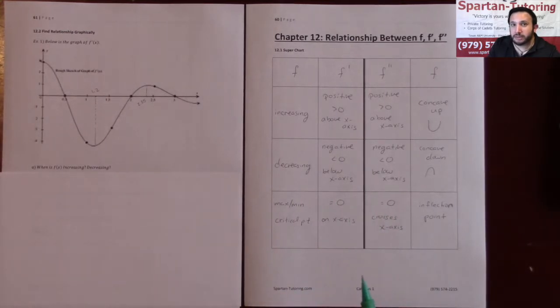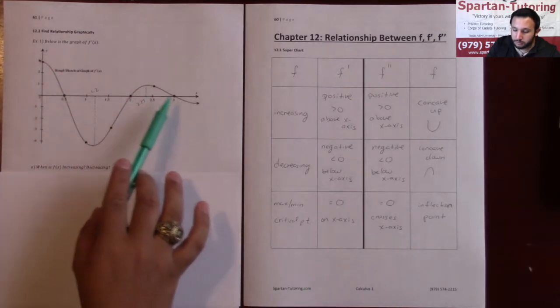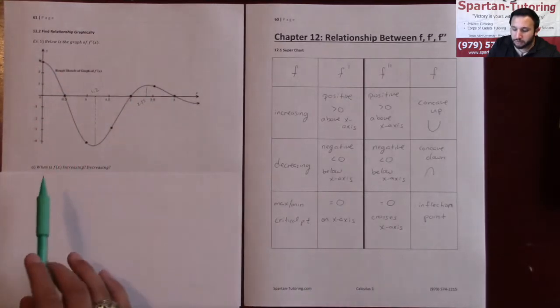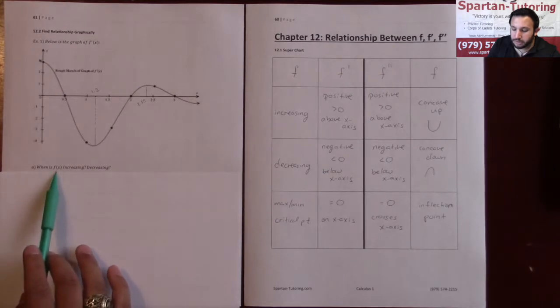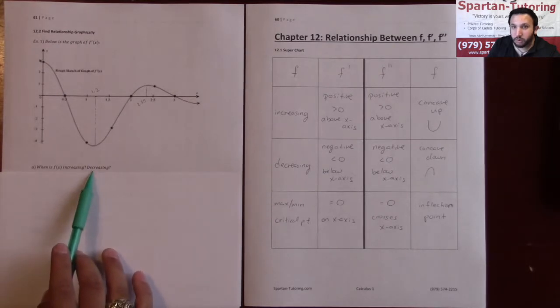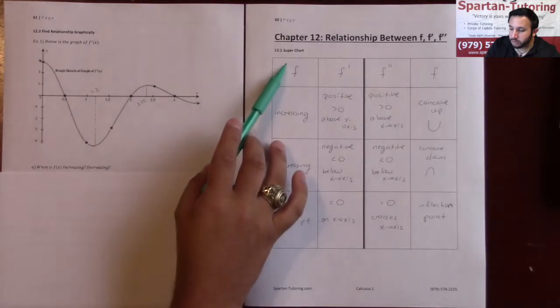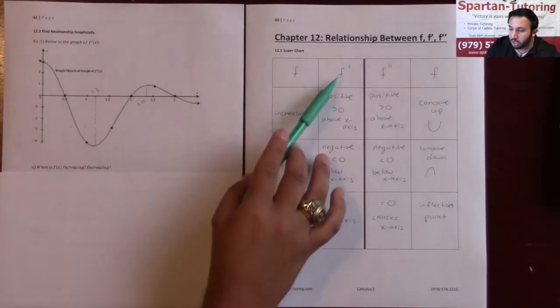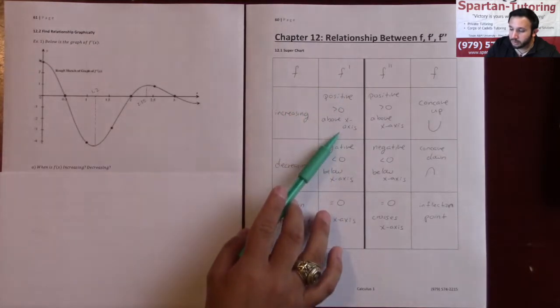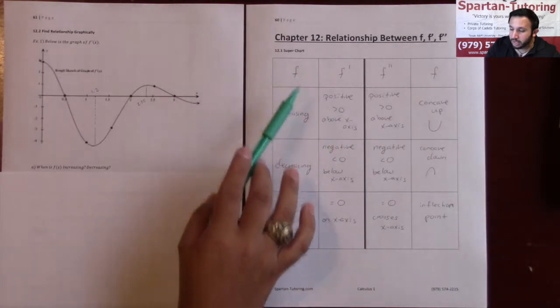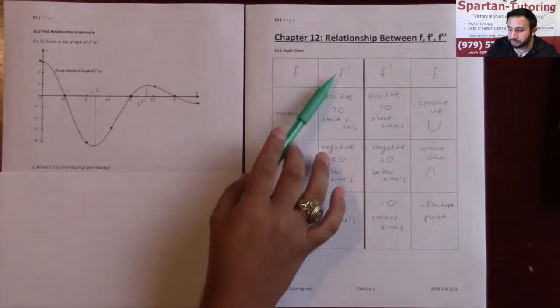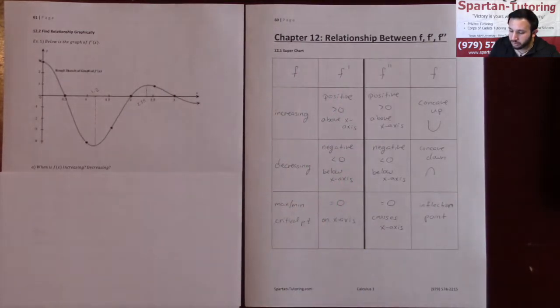Below right here is the graph of the derivative. Given the graph of the derivative, part A asks: when is f of x increasing, when is it decreasing? F is increasing when the derivative is above the x-axis, and f is decreasing when f prime is below the x-axis.